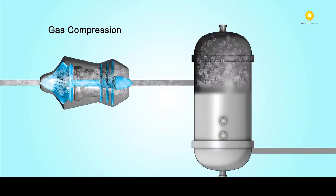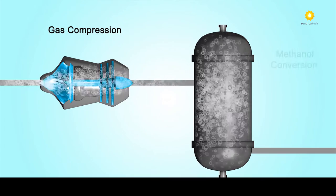The syngas is passed through a compressor before being introduced into the methanol converter.